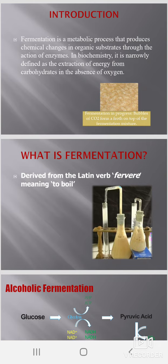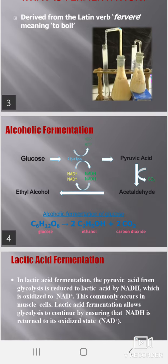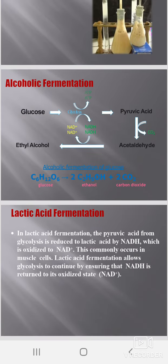In alcoholic fermentation, first of all glucose goes into glycolysis by removal of two ATPs, and NADH is converted into NAD positive. From pyruvic acid, it can be converted into acetaldehyde with the removal of carbon dioxide, and that goes into the formation of ethyl alcohol.